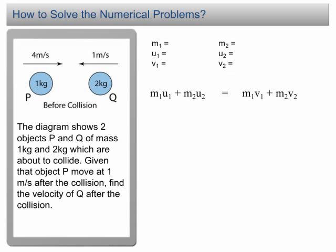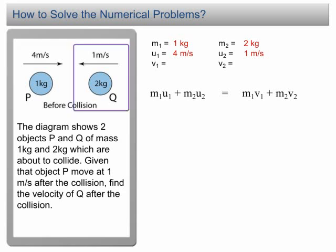The mass M1 is 1 kg and M2 is 2 kg. The initial velocity U1 is 4 m/s. We must be very careful when writing the value of velocity — velocity is a vector quantity and is negative if the object moves in the opposite direction. In this case, Q moves in the opposite direction, so U2 is −1 m/s, not +1 m/s.